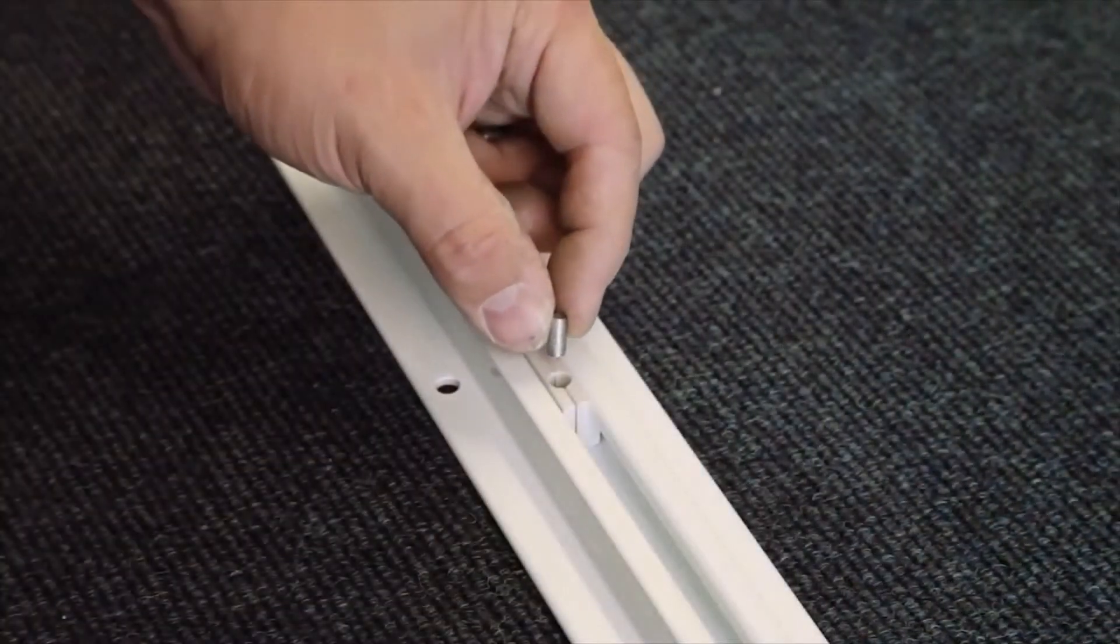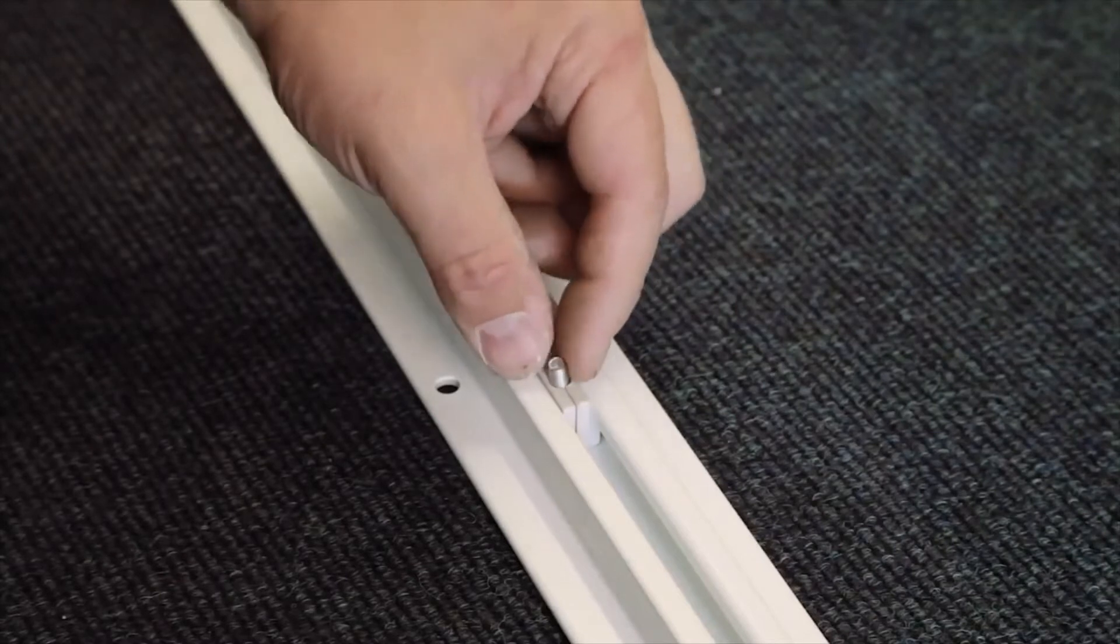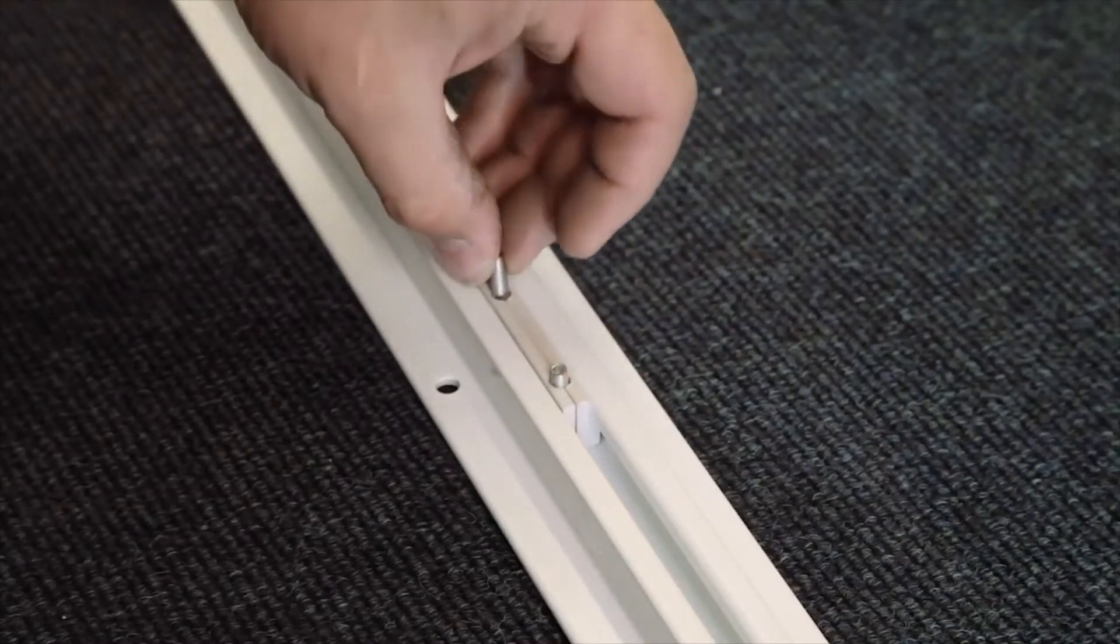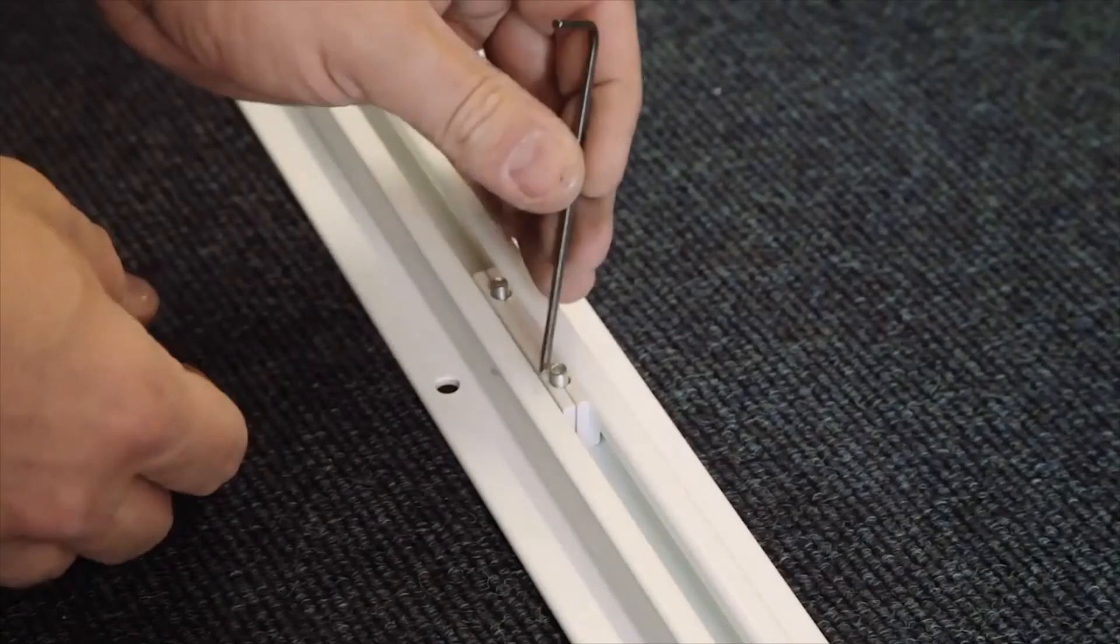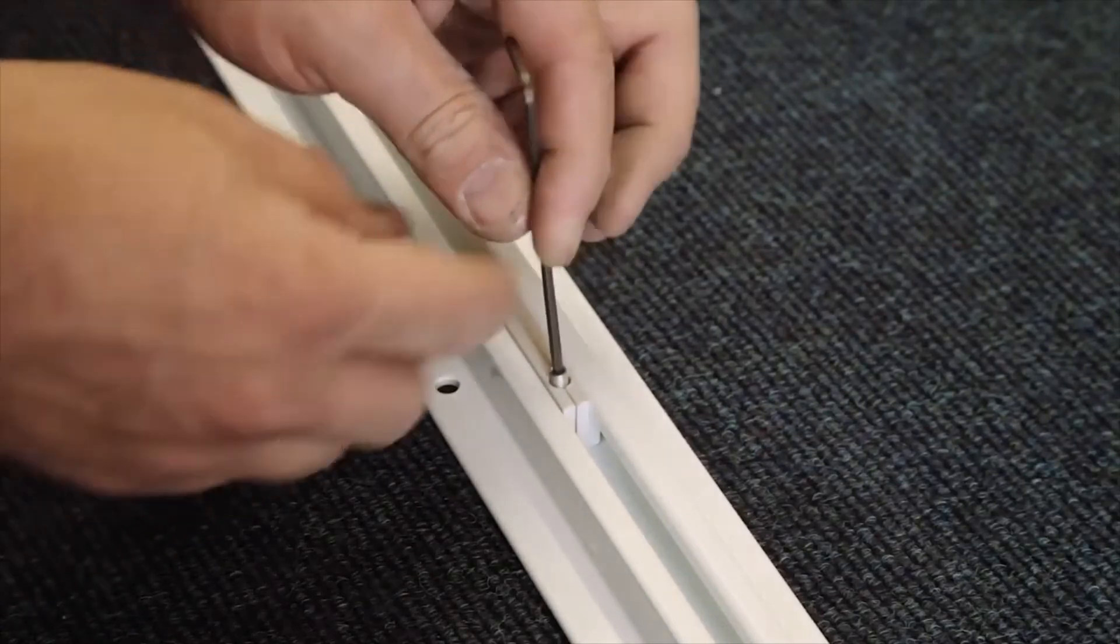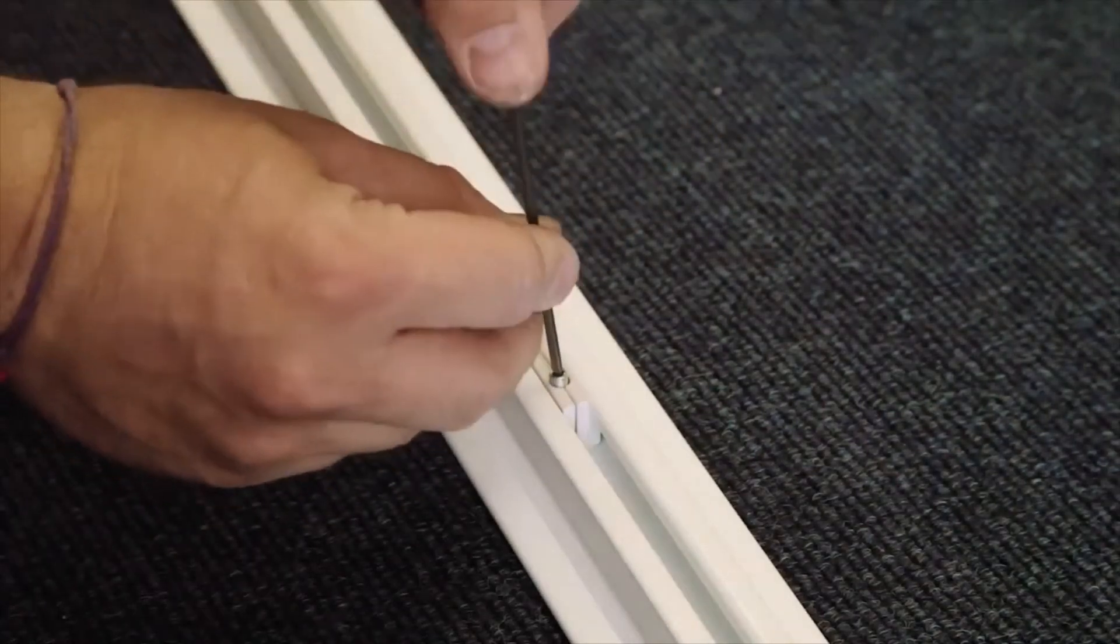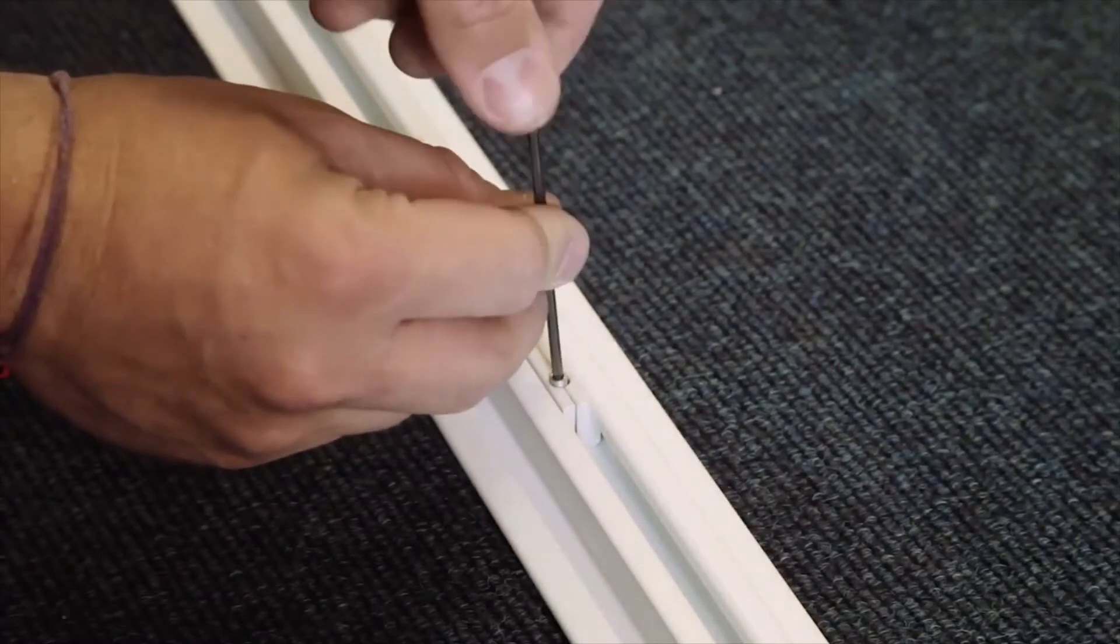Once you've slid it into about half way, just insert the two grub screws and tighten those up slightly. You'll be able to adjust this once you've got everything in place so it sits central.